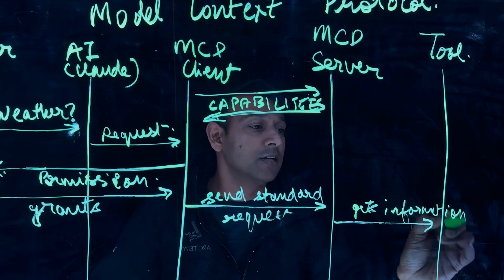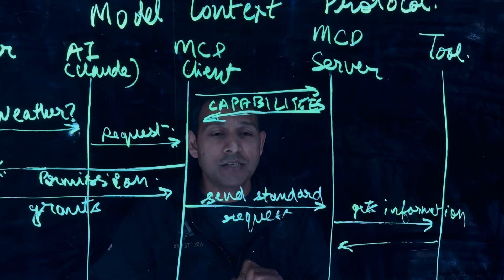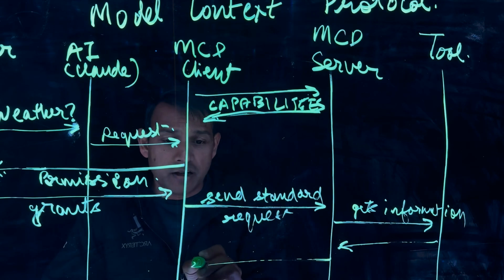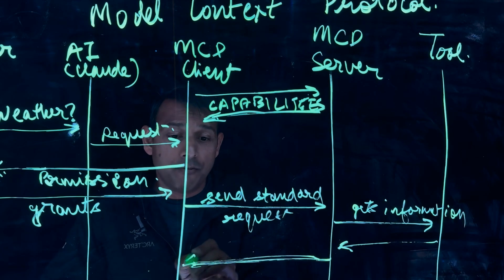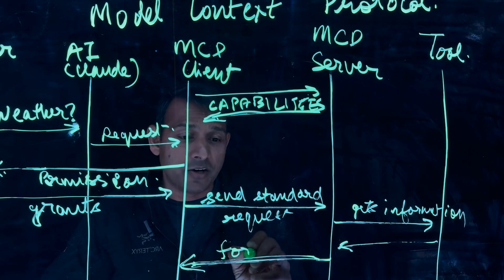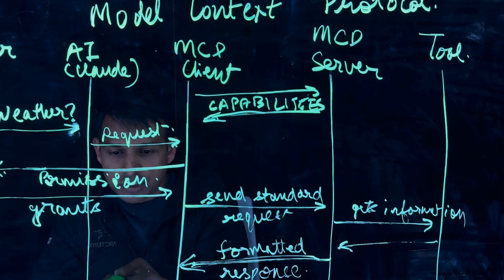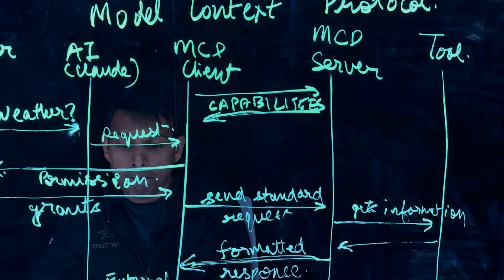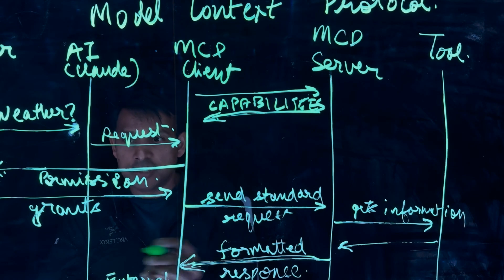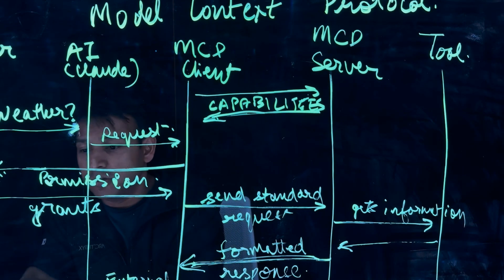And once that information is returned back to the MCP server, MCP server returns a very well formatted response, and MCP client returns external data. So this comes back the external data which is then returned back to the user.